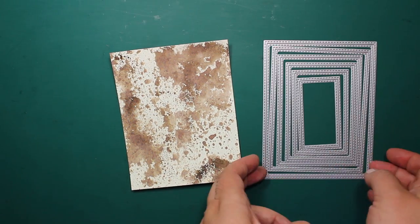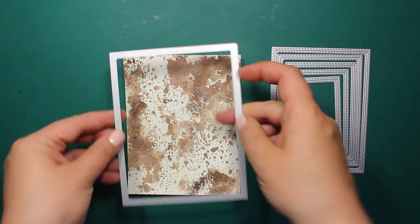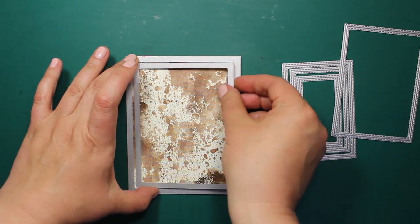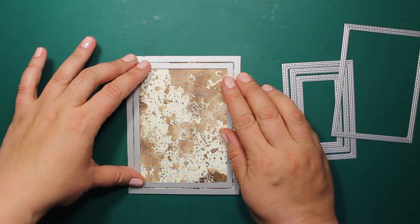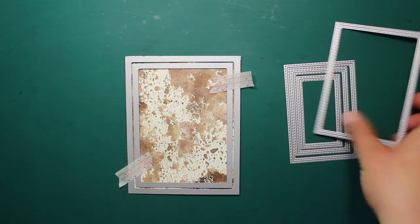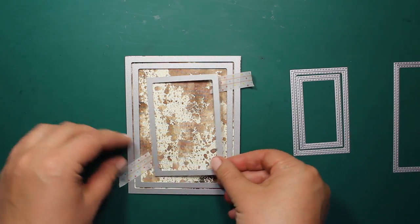The dies I will be using are double-stitched rectangles by Cat Scrappiness. They are perfect for making stitched frames and panels and this is exactly what I'm going to do. I'm using three rectangles from the set and securing them with washi tape.